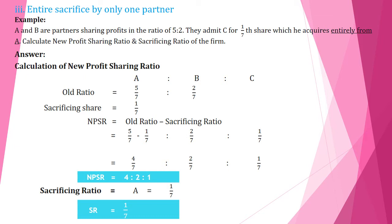Calculation of new profit sharing ratio: old ratio for A is 5/7 and for B is 2/7. Sacrificing share is only for A — 1/7. We apply the formula: new profit sharing ratio = old ratio minus sacrificing ratio. Since A alone is sacrificing, we deduct only from A. A's old share is 5/7 and sacrificing share is 1/7. B is written as it is.